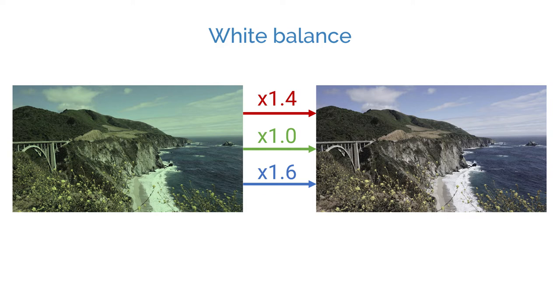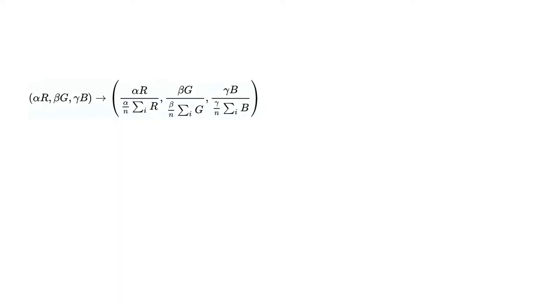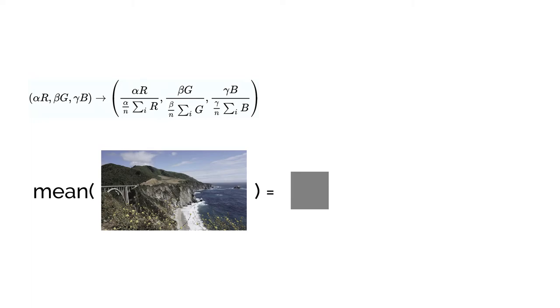A very simple way to do that is to normalize every color channel by their average so that the mean of all colors in a scene is a perfect gray. This method is called the gray world algorithm.